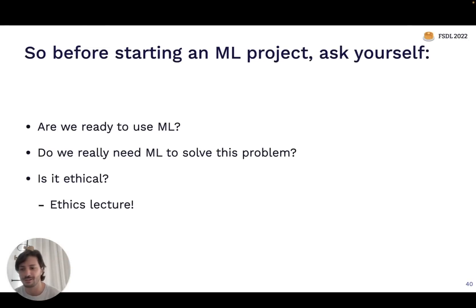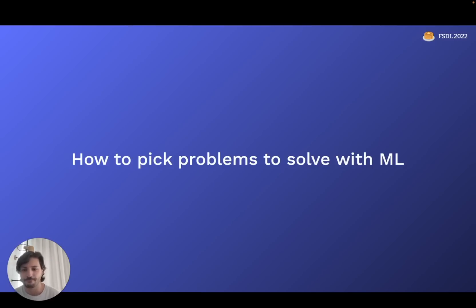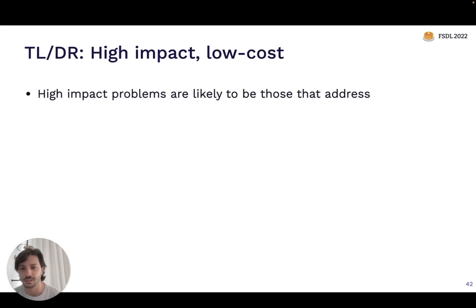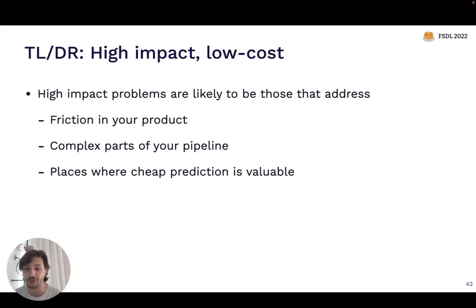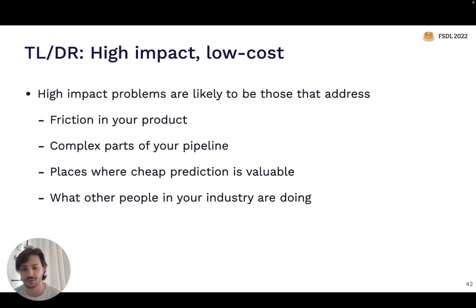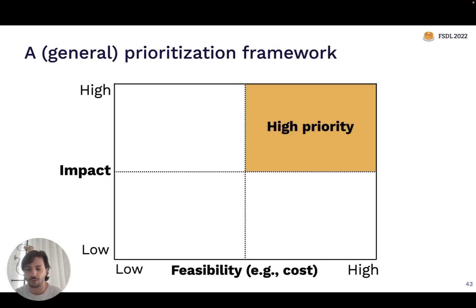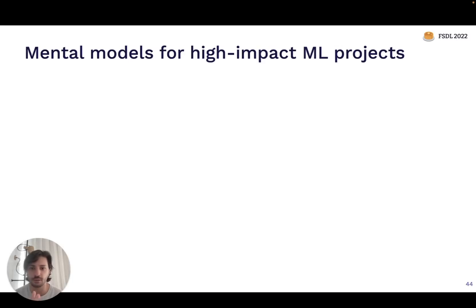If we feel ready to use ML, how do we know if the problem is a good fit? The TLDR is to look for use cases that have high impact and low cost, similar to any other project prioritization. We'll talk about heuristics like friction in your products, complex parts of your pipeline, places where it's valuable to reduce the cost of prediction, and looking at what others in your industry are doing — a very underrated technique. The prioritization framework: select projects that are feasible (low cost) and high impact.